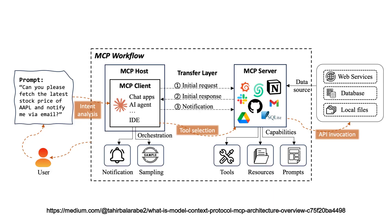Now let's look at this in action. Suppose you give a prompt like 'fetch the stock price of Apple and notify me via email.' The AI agent first analyzes the intent, selects the right tools via the MCP client, and then the MCP server handles the actual API calls, fetching data from services, databases, or local files. The final result is routed back and delivered to the user.